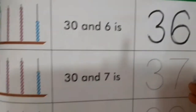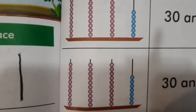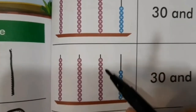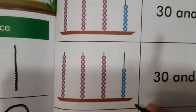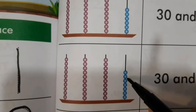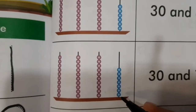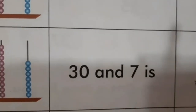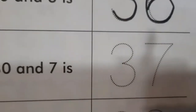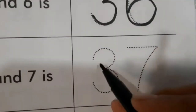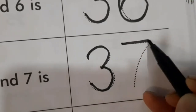Okay, children. Now, we move to the next one. 1st line में 10 beads, 2nd line में 10 beads, और 3rd line में 10 beads. और लास्ट लाइन में कितने beads है? 1, 2, 3, 4, 5, 6 and 7. So, we have 3, 0 — 30 and 7, which is equal to 3, 7 — 37. So, let's trace the number 3, 7, 37.